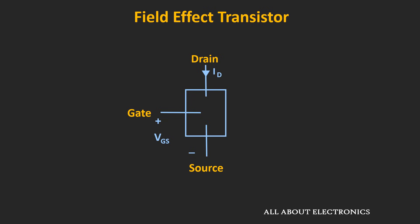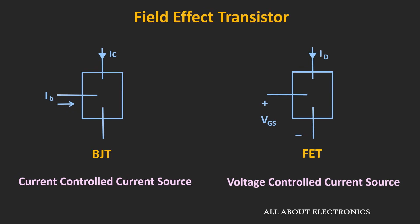This field effect transistor is a voltage control device, meaning the input voltage between the gate and the source terminal controls the output current. On the other hand, if you look at the BJT or the bipolar junction transistor, it is a current control device. This is one of the key differences between the field effect transistor and the bipolar junction transistor.